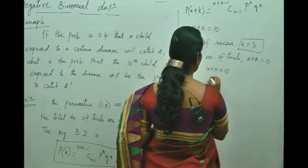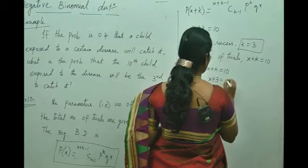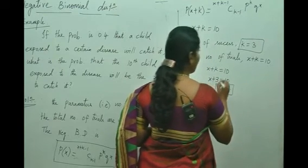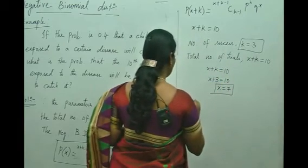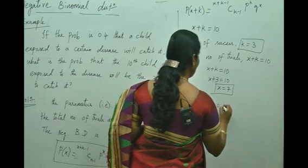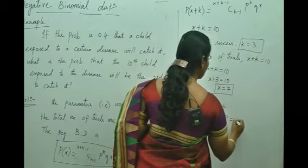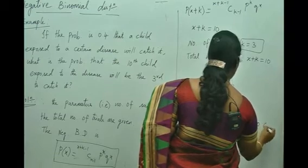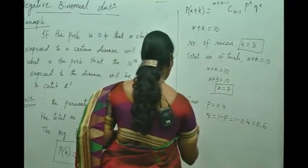From x + k = 10, substituting k = 3 gives x + 3 = 10, therefore x = 7. Now p is given as 0.4, so q = 1 − p = 1 − 0.4 = 0.6. We now have all the required values: x = 7, k = 3, p = 0.4, q = 0.6.